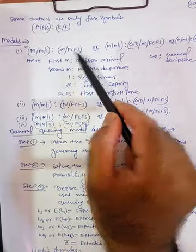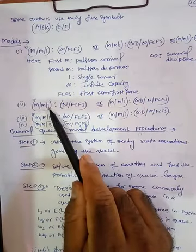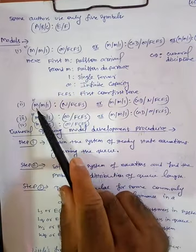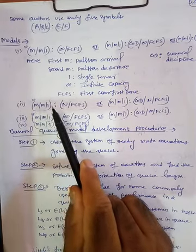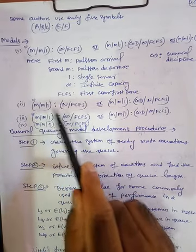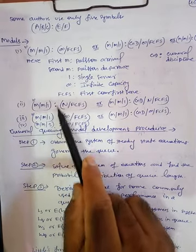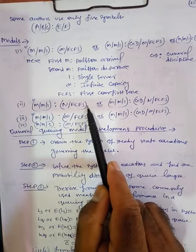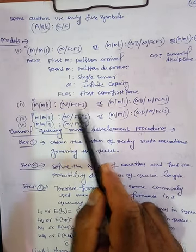Similarly, MM1/N/FCFS: Poisson Arrival, Poisson Departure, Single Server, where N number of customers are allowed in the system and First Come First Serve is the service discipline.